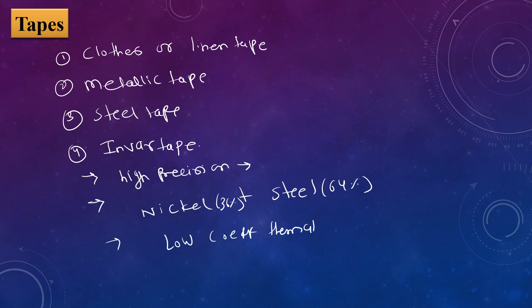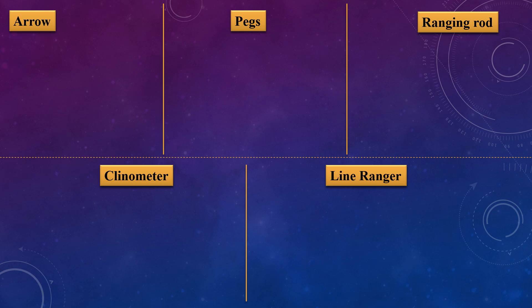The invar tape has a low coefficient of thermal expansion, so the effect of temperature on invar tape is less compared to other tapes. It is easy to handle. The width of this invar tape is 6 mm and it is available in 30-meter and 100-meter sizes.